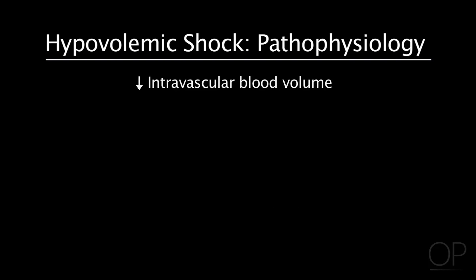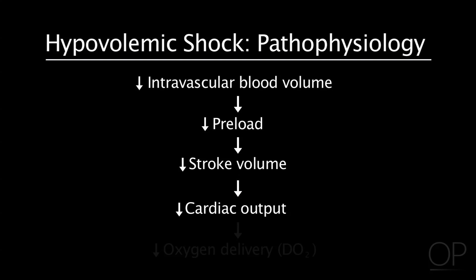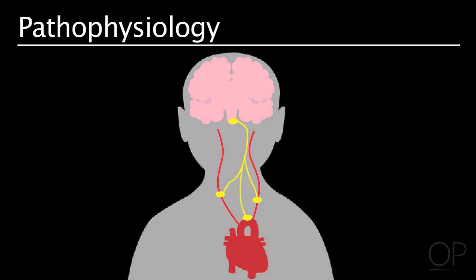As far as the pathophysiology for hypovolemic shock, you generally have a decreased intravascular blood volume, which leads to decreased preload, decreased stroke volume, therefore decreased cardiac output, and decreased oxygen delivery. Initially, this leads to an activation of peripheral and central baroreceptors and a release of catechols to help maintain the blood pressure and perfusion pressure to vital organs.